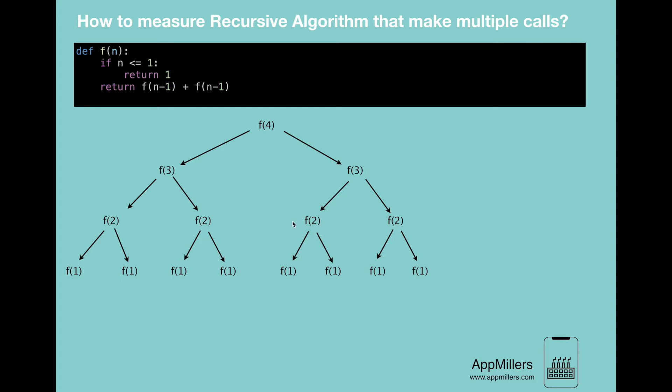Then these f(2)s, each of them will call f(1) twice, and this will make 8.